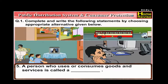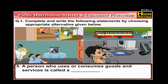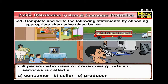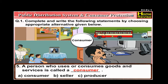Number 5: A person who uses or consumes goods and services is called a dash. Options are Consumer, Seller, or Producer. The answer is: a person who uses or consumes goods and services is called a Consumer.